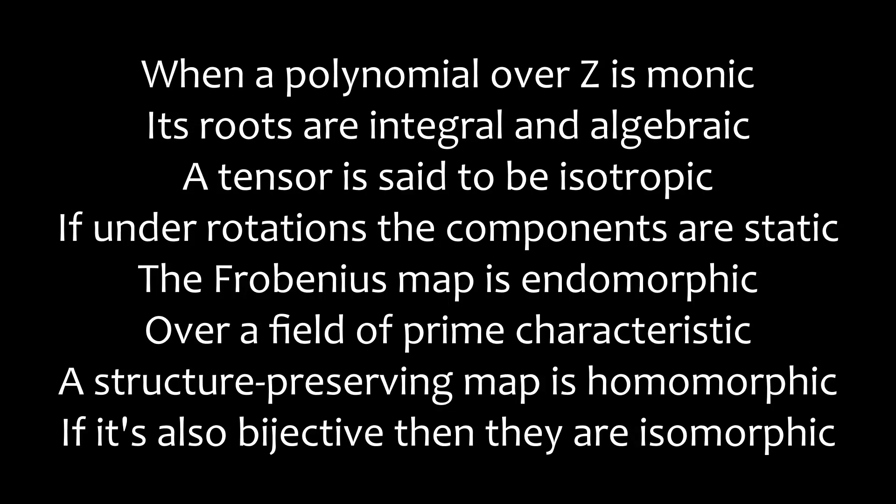When a polynomial over Z is monic, its roots are integral and algebraic. A tensor is said to be isotropic if, under rotations, the components are static.